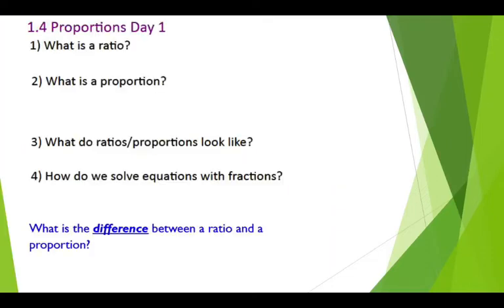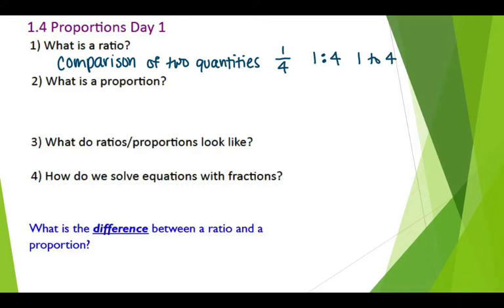So first and foremost, let's talk about a few definitions. What is a ratio? A ratio is a comparison of two quantities. There are a couple different ways that you can write a ratio. Sometimes you'll see it written as a fraction, like one-fourth. Sometimes you'll see it written with a colon in between. You would read that as one-to-four. Or sometimes you may even see it written out as one-to-four in that manner. What is a proportion? So when you set two ratios equal to each other, you get a proportion.